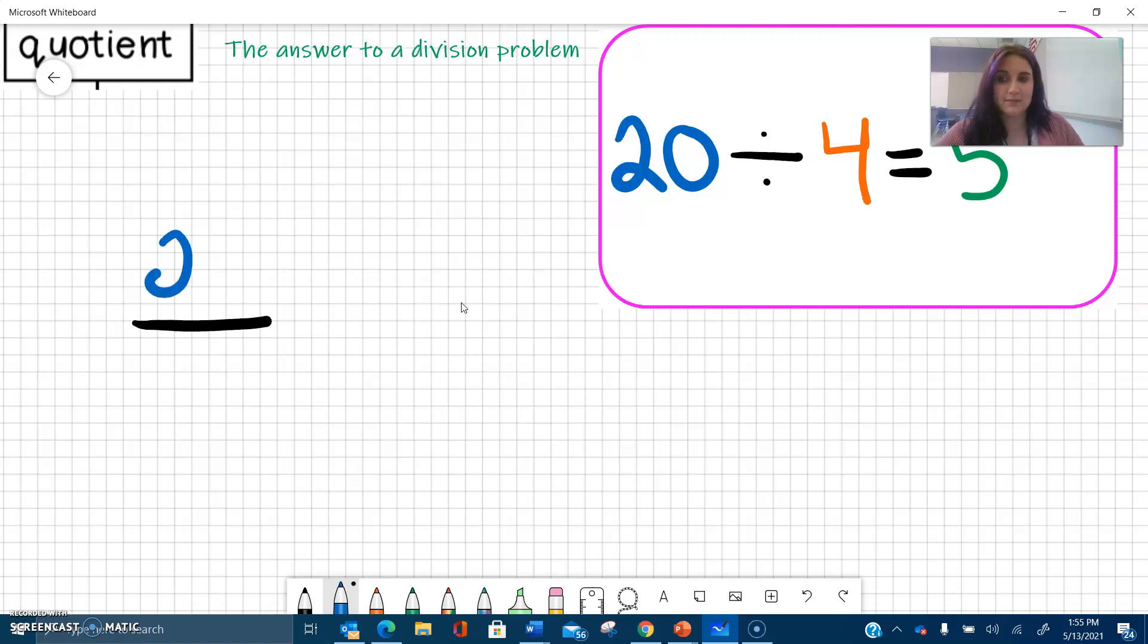So 20 divided by, oh I'm sorry, 20 divided by 4 equals 5. So the dividend divided by the divisor equals the quotient. So we can use this fraction bar to represent division as well. These mean the same thing.